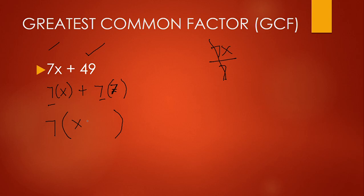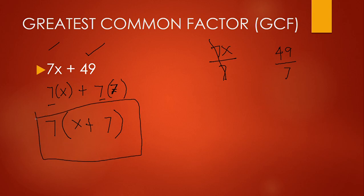So when we divide 7x by 7, the 7s cancel out and what is left is only your x. Then we have a plus. For the second term, since we've taken out that 7 from 7 times 7, what is left is your 7. Or, 49 divided by 7 is simply 7. So the result when you've factored out the greatest common factor of 7x plus 49 is 7(x + 7).